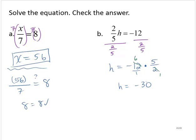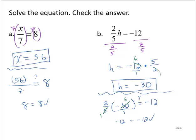Let's check our solution. Is 2 fifths of negative 30 equal to negative 12? Well, thinking of that negative 30 as a 30 over 1, I can reduce between the 5 and the 30 by a factor of 5, leaving a 1 and a 6. And 2 times negative 6 is negative 12. And that is equal to negative 12. So h equals negative 30 is the solution.